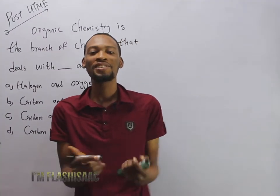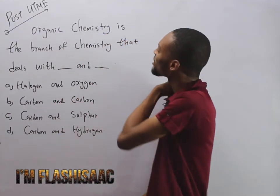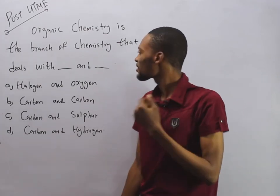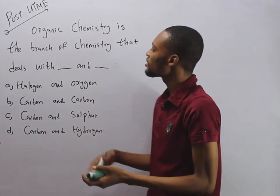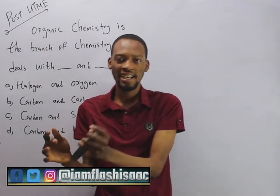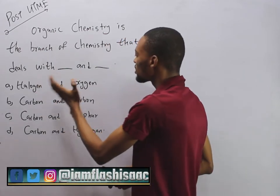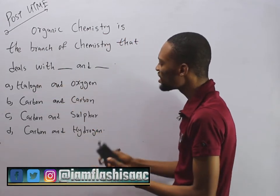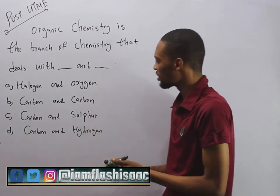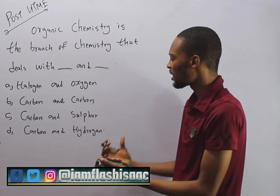Hello, welcome to Chemistry Class with Flash Isaac. Today we shall be taking care of this post-UTM question. It says: organic chemistry is the branch of chemistry that deals with — A: a halogen and oxygen, B: carbon and carbon, C: carbon and sulfur, and D: carbon and hydrogen.